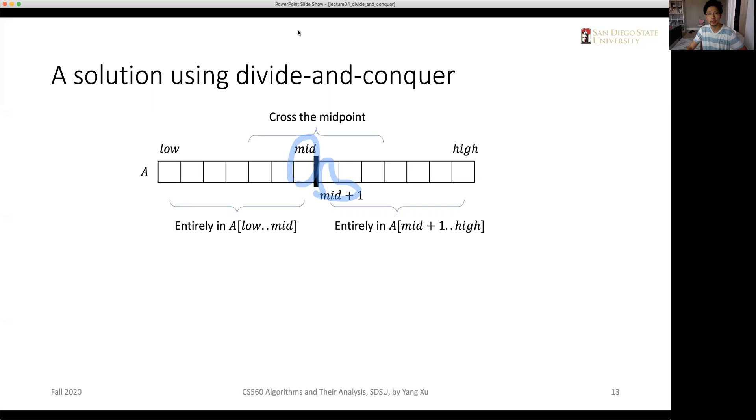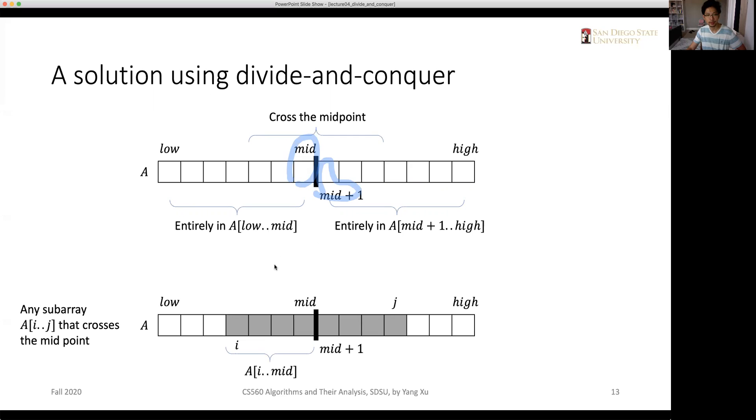The maximum subarray should be one of the three cases. For any subarray that crosses the midpoint, we can divide it into two parts. The left part is from i to mid and the right part is from mid plus one to j.